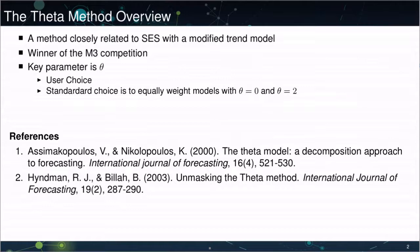There's a single parameter, theta. This is not something that is going to be estimated. You can think of it as part of the model itself. The standard choice is to use two thetas, theta equals zero and theta equals two, and to equally weight the forecasts that come from these two choices of theta.